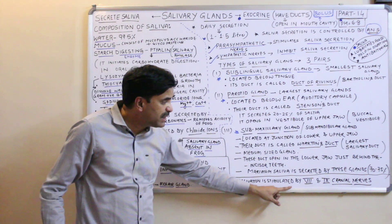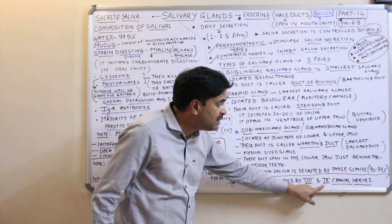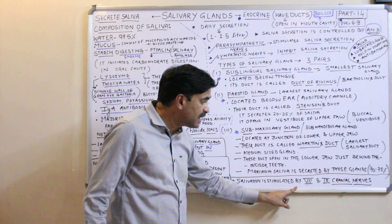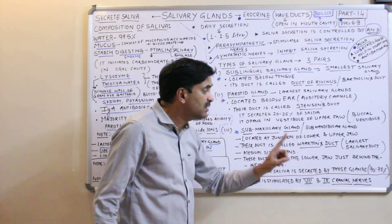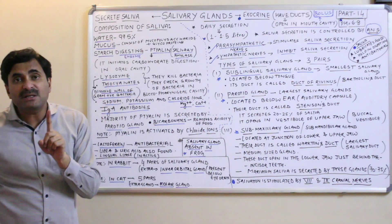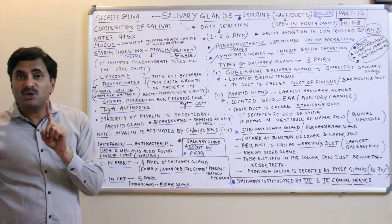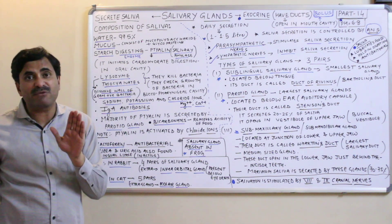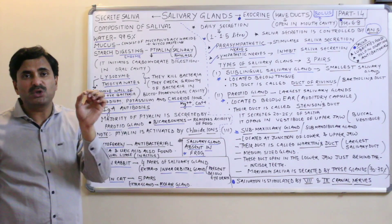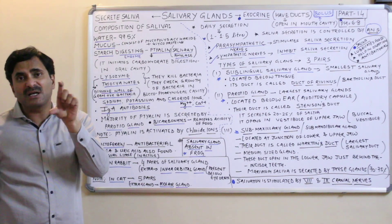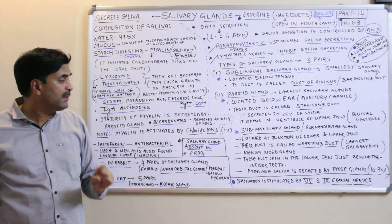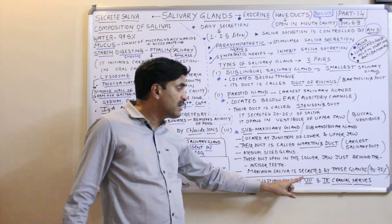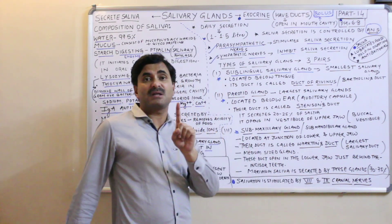Salivation is stimulated by the 7th and 9th cranial nerves. Remember this — salivation is stimulated by the 7th and 9th cranial nerves. In human beings, there are 12 pairs of cranial nerves.